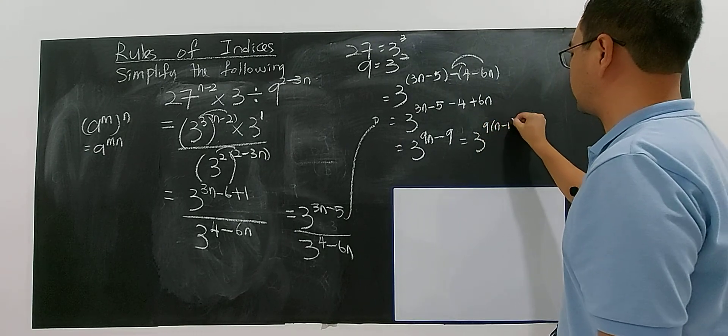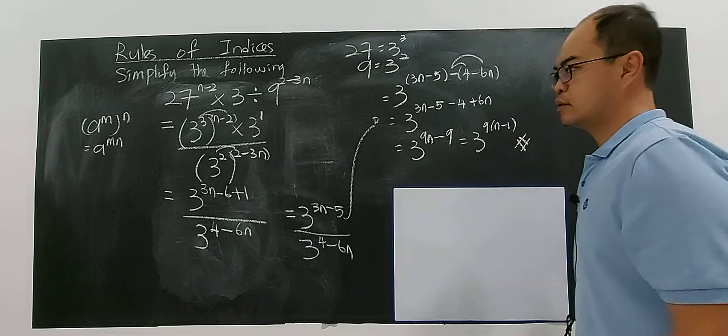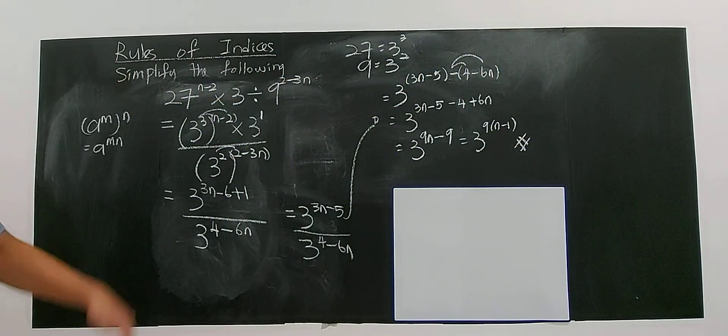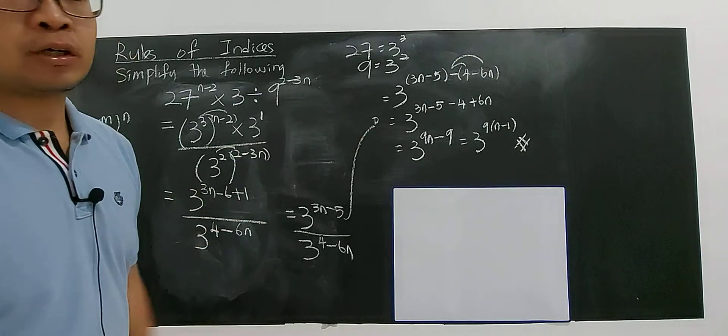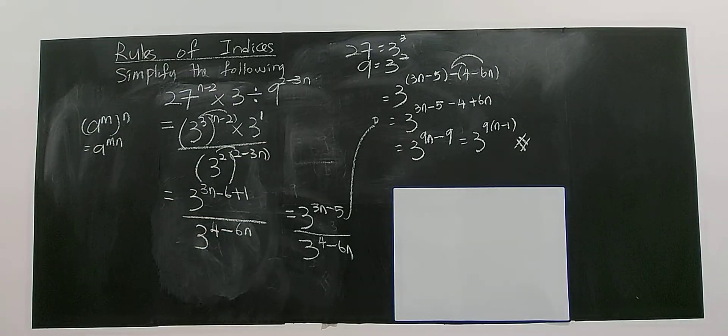9 times (n minus 1). So this is the way you simplify an index problem, step by step. Apply the correct rules and you reach your final answer correctly.